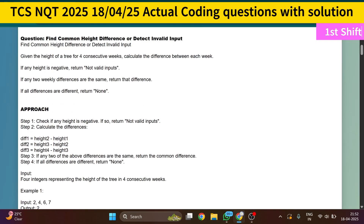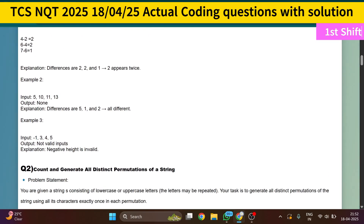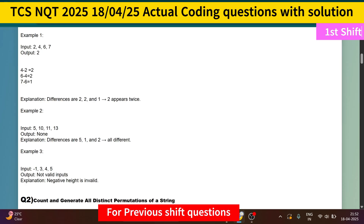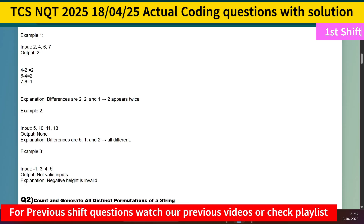If all differences are different, print 'none'. If any peak input is a negative value, it is considered a non-valid input. This was quite an easy question. I will now explain the C++ code. Python and Java code will be provided in the description or comment box. Remember, language doesn't matter — if you can crack the logic, it's easy to write the code and pass the test cases.